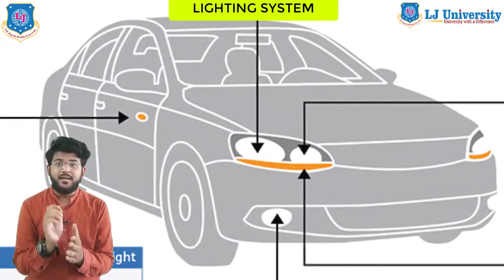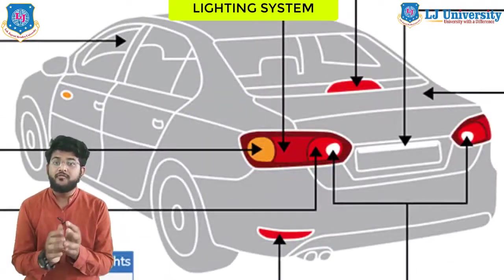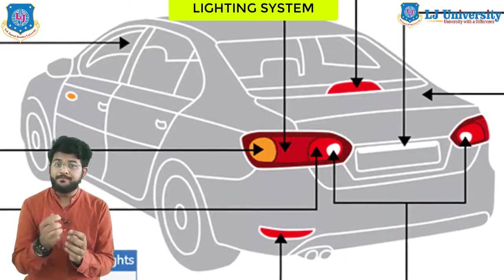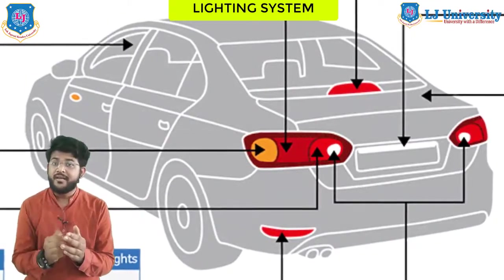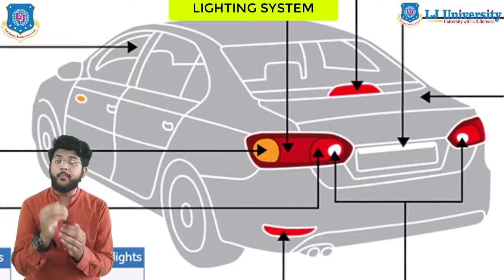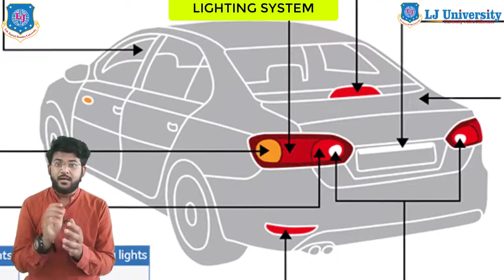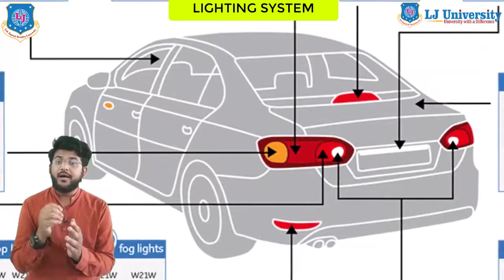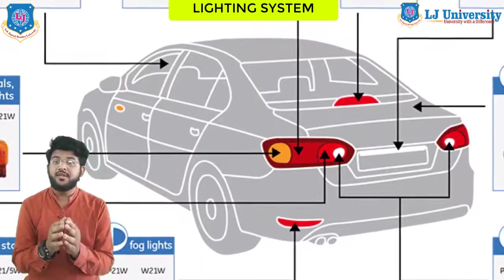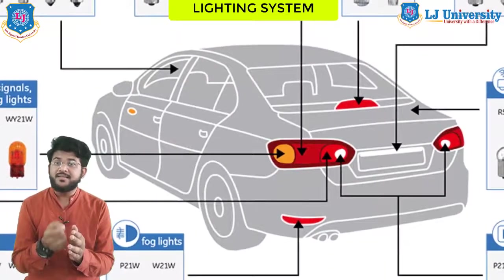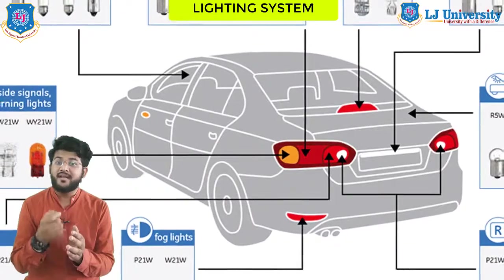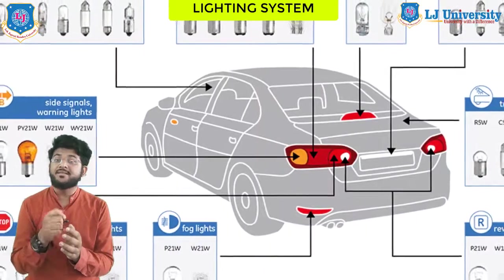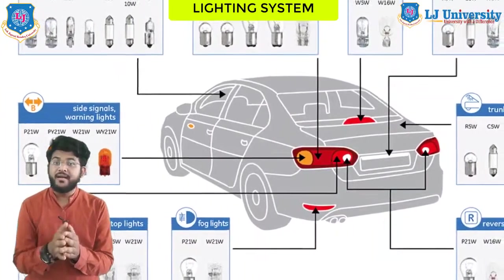The lighting system of a motor vehicle consists of lighting and signaling devices which are mounted or integrated at the front, rear, sides, and in some cases on the top of the motor vehicle. The lights illuminate the roadway for the driver and increase the visibility of the vehicle, allowing other drivers and pedestrians to see the vehicle's presence, position, size, and direction of travel, as well as the driver's intention regarding direction and speed. Some emergency vehicles usually carry distinctive lighting equipment to warn other drivers and indicate priority of movement in traffic.